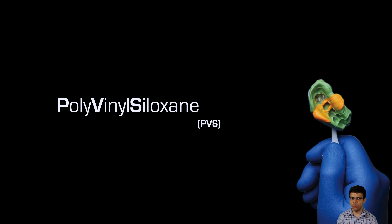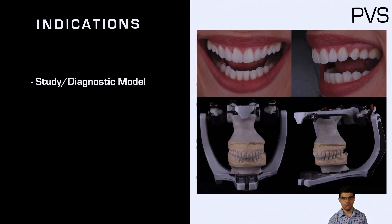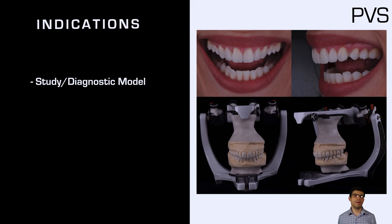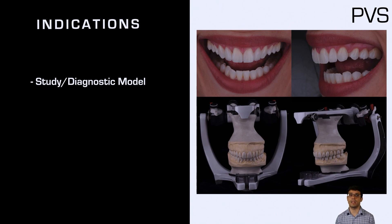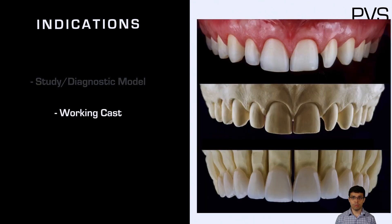The material used in that experiment was polyvinyl siloxane — the same one we use in dentistry. PVS can be used for study and diagnostic models; for example, if you're doing a wax-up of a static case, it's better to use PVS because you'll later create mock-ups and putty guides for reduction. Alginate is sometimes not precise enough for that type of precision work. You can also use PVS for any type of working cast.